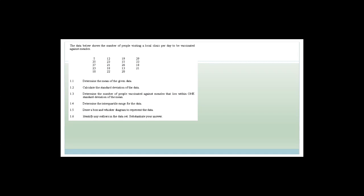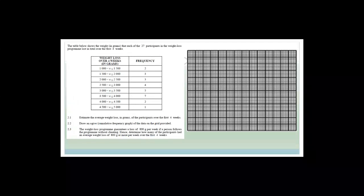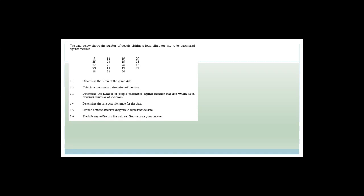So the best thing to do is to do some examples. We're going to do two, three, four examples, and then if we've got time after that, we're going to do revision of Paper 1. So now the data below shows the number of people visiting a local clinic per day to be vaccinated against measles. These questions are all old exam paper questions — exemplar questions for Grade 11 maths.